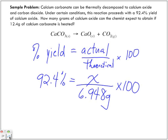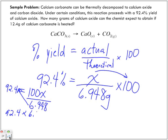So what we're going to do is 92.4 is equal to x times 100 which gives me 100x divided by 6.948. All right, so what we want to do is we want to isolate for x. So, we're going to bring this from the denominator across the equal sign, so it becomes multiplication. So, 92.4 times 6.948 and it is equal to 100x. I want to isolate for x, so I'm going to divide this by 100, which means I'm dividing this by 100 as well.